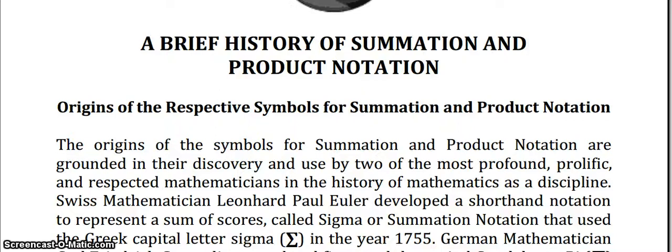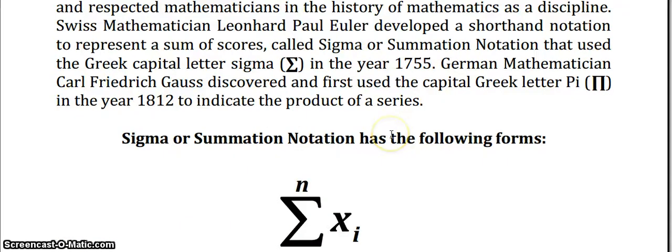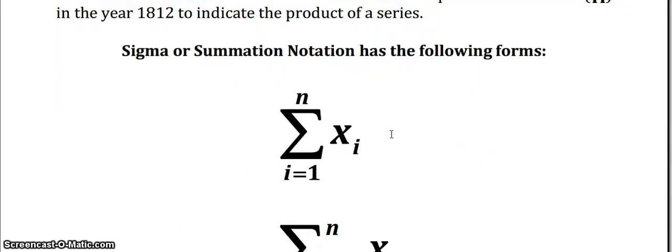It was first founded by a mathematician named Euler, though his name is spelled E-U-L-E-R, around 1755, and then Gauss, whom you saw in the previous chapter with the Gaussian curve or the normal curve, used the same nomenclature when he began to use pi for multiplication. And again, these are Greek letters, sigma and pi.